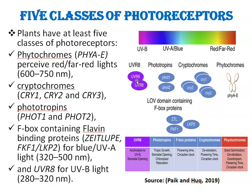Phytochromes are of five types — phytochrome A to E. Phytochrome A is type 1 and it is light labile, while phytochrome B to E are all type 2 and are light-stable phytochromes. Cryptochromes 1, 2, and 3 actually perceive blue and UVA light. Phytochromes perceive red and far-red light, with wavelengths ranging from 600 to 750 nm. Phototropins 1 and 2 perceive blue light. F-box containing flavin-binding proteins perceive blue and UVA light ranging from 320 to 500 nm, and UVR-8 perceives UVB light ranging from 280 to 320 nm.